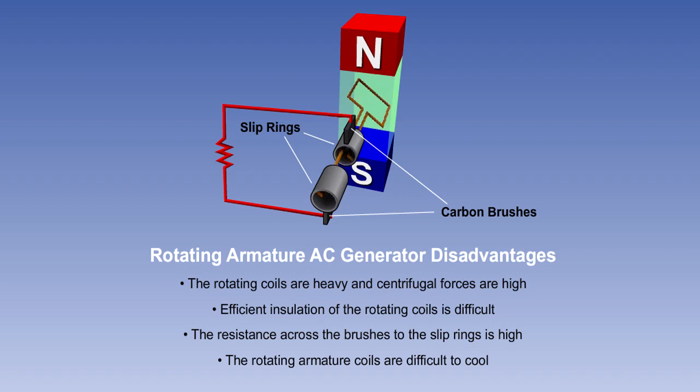For these reasons, the rotating armature is only used in very small output AC generators, and is not generally used for supplying aircraft AC systems.